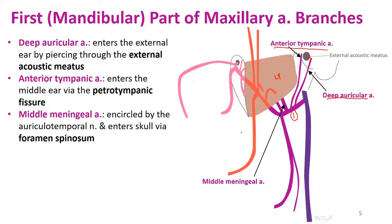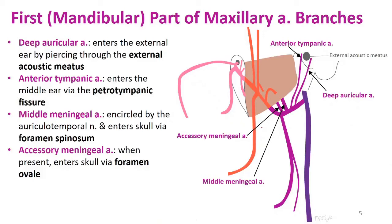Next is the middle meningeal artery, which goes superiorly through the foramen spinosum to supply the area. The auriculotemporal nerve encircles it, creating that notable relationship. You may also see an accessory meningeal artery, which courses into the cranial cavity through the foramen ovale.